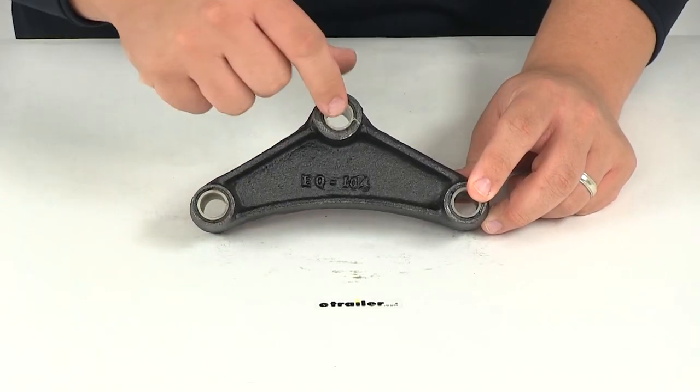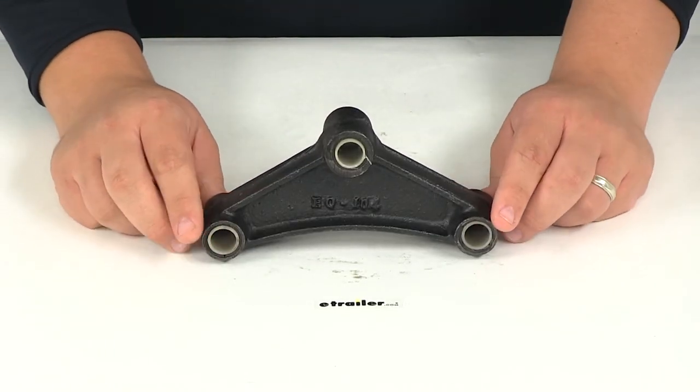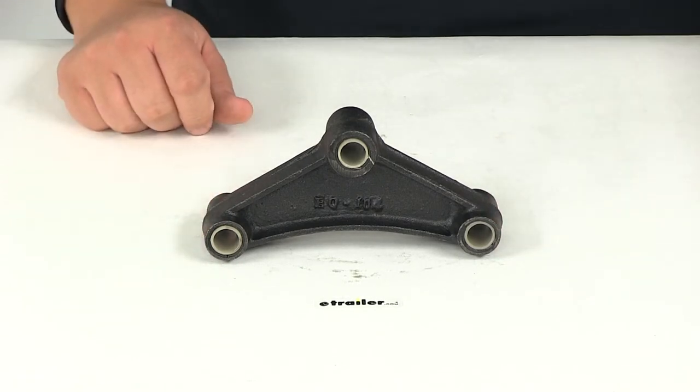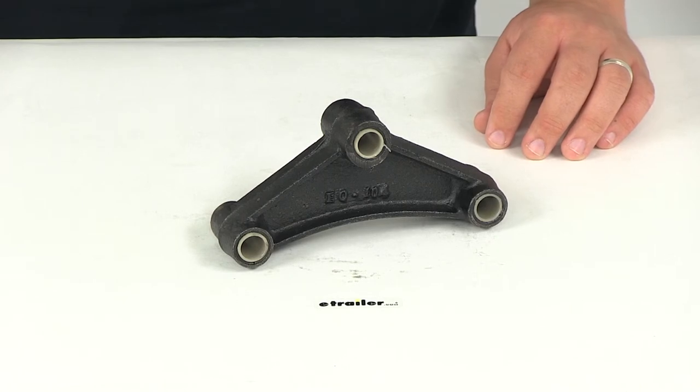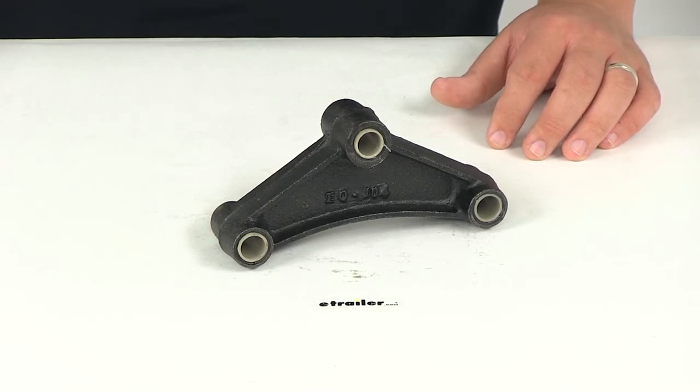The bushings are included, so those are already in those holes, again providing that hole diameter of nine sixteenths of an inch. That's going to do it for today's review of part number TREQ104. This is TruRide's curved equalizer for one and three quarter inch wide double I springs.